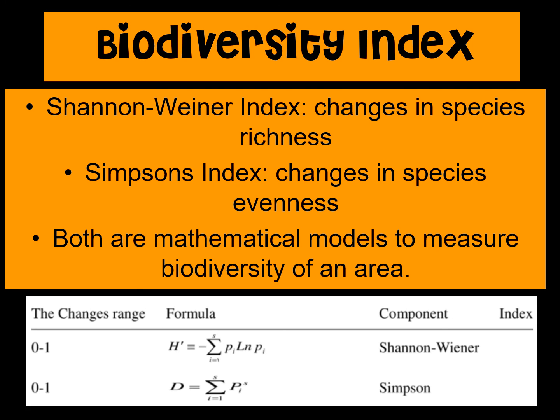There are mathematical models used to measure the biodiversity of an area. The two that come up in AP Bio are the Shannon Index and the Simpson's Index. The Shannon Index is more useful for seeing changes in species richness — differences in the number of species. The Simpson's Index looks more at changes in species evenness over time in an area. Both give a good picture of biodiversity and are usually used together.